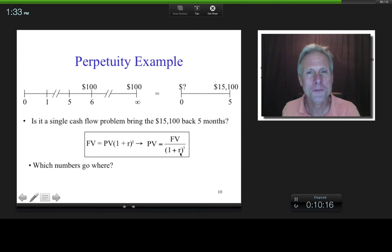And what would I use for R? I'm bringing it back 5 monthly periods, so I'd better be working with an effective monthly rate. So this needs to be an effective monthly rate. And what's my T? How many periods am I bringing it back? 5, right? So that's what I would put there, and I would get about 14,609 at time 0.